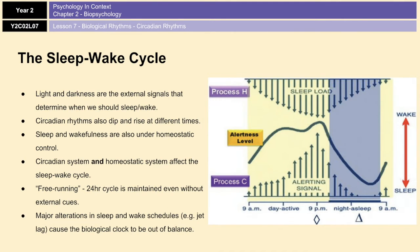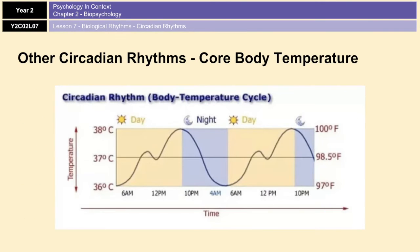Now, there are also other circadian rhythms in your body, which I'll quickly tell you about. You've got core body temperature. Your core body temperature is at its lowest, as you can see on the chart in front of you there, at about 36 degrees at about 4:30 in the morning. And it's at its highest, at about 38 degrees at about 6 p.m.